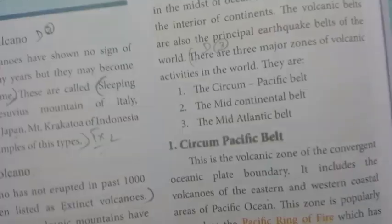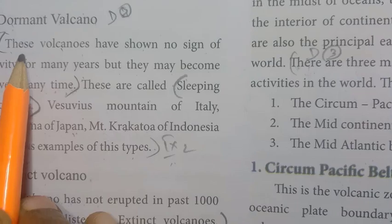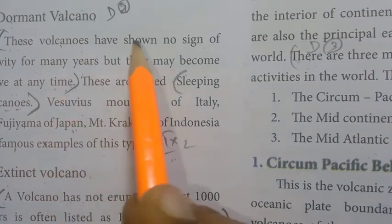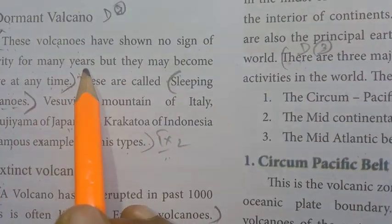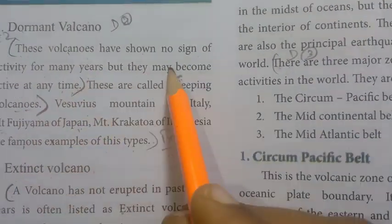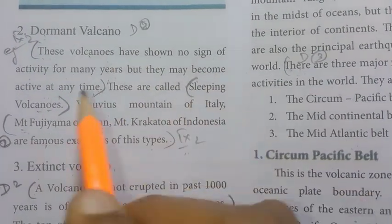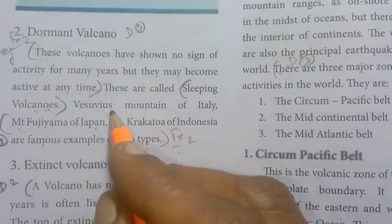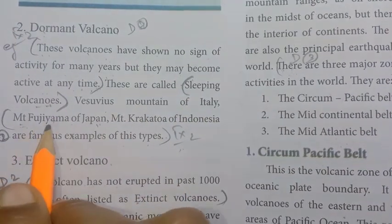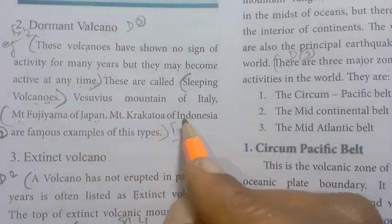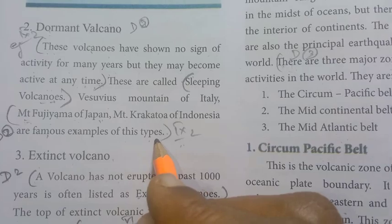Dormant volcano: these are called sleeping volcanoes. Famous examples include Vesuvius Mountain of Italy, Mount Fujiyama of Japan, and Mount Krakatoa of Indonesia.